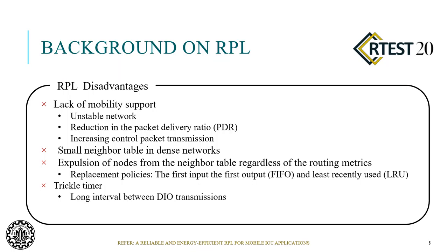There are some disadvantages in RPL. Lack of mobility support causes an unstable network, reduction in packet delivery ratio, and increasing control packet transmission. Another RPL disadvantage is the small neighbor table in dense networks — due to limited table size, it is necessary to efficiently manage the neighbor tables. RPL evicts nodes from the neighbor table regardless of routing metrics. Also, the long interval between DIO transmissions in the Trickle timer is not suitable for frequent updates in mobile networks.